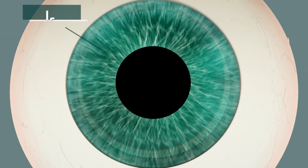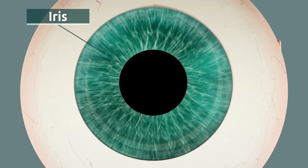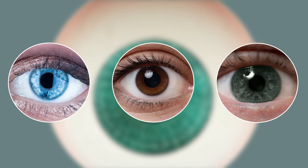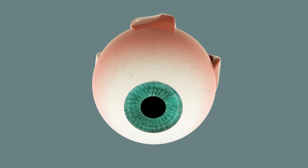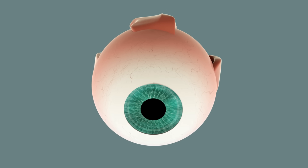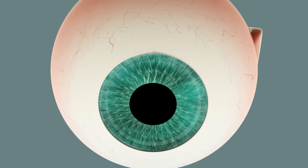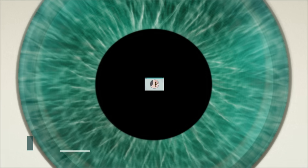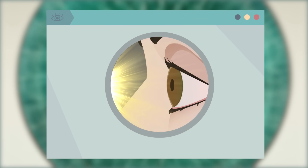The iris controls the amount of light that enters the pupil, and it is also the part of the eye that has color. That's why we say that some people have blue eyes while others have brown or green eyes. Did you know that eye color is an inherited trait? The pupil is a black circle situated in the middle of the iris and allows light to enter the eye. When there's a lot of light, pupils become smaller — in other words, they contract — while in low light, the size of the pupil increases, meaning that pupils dilate.